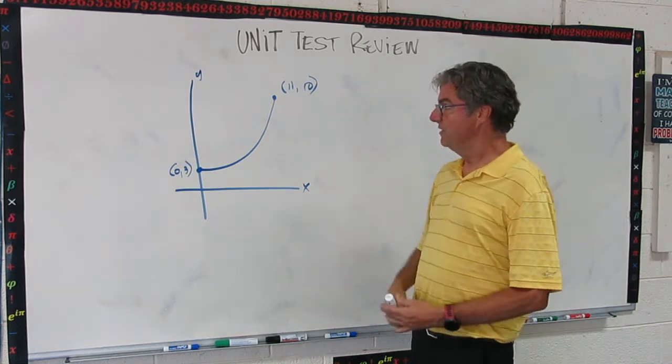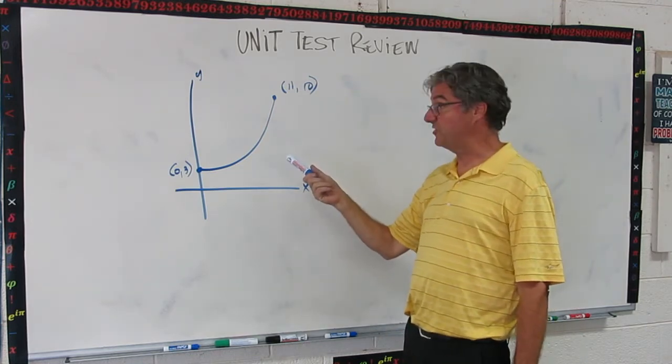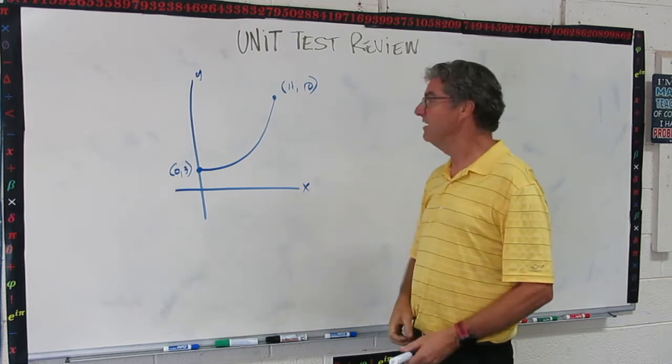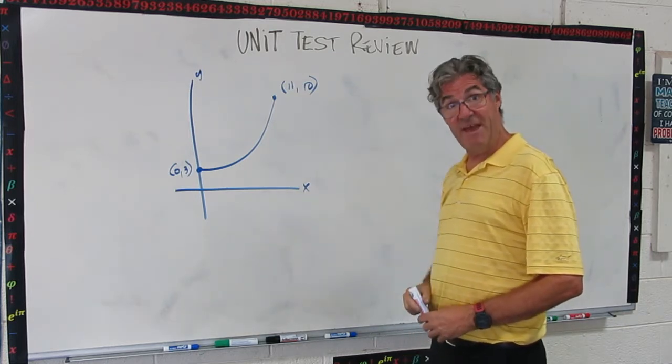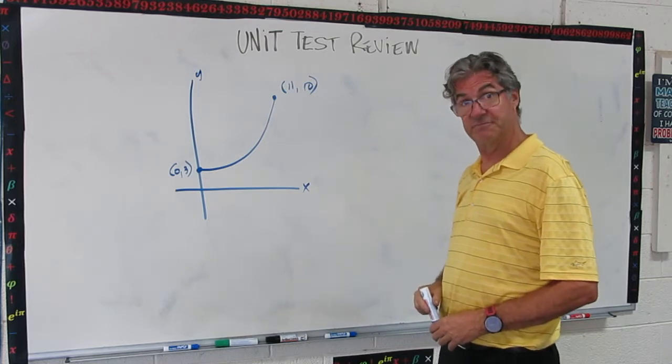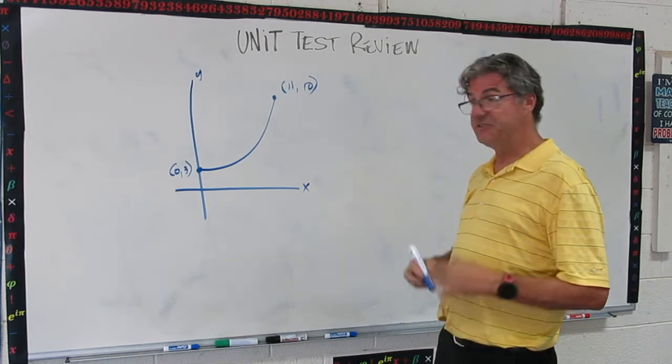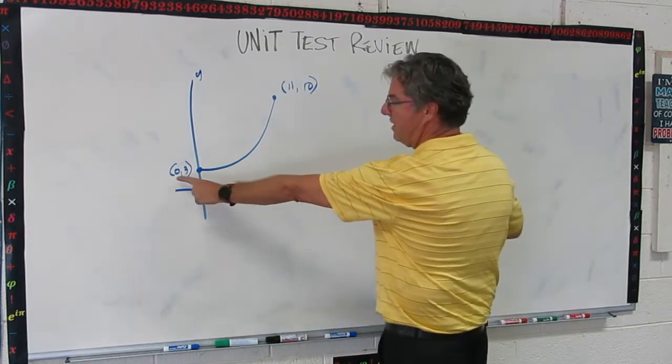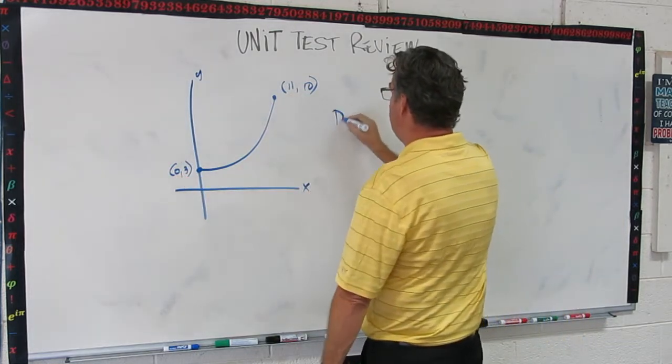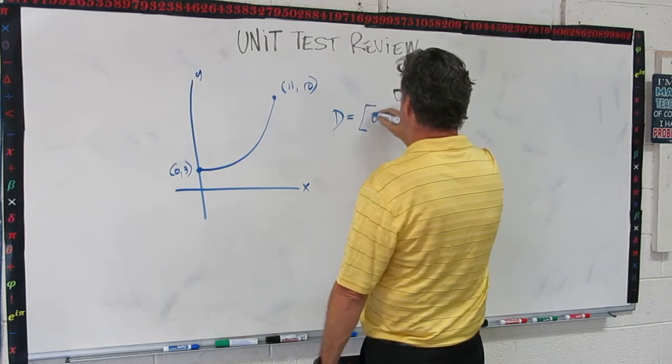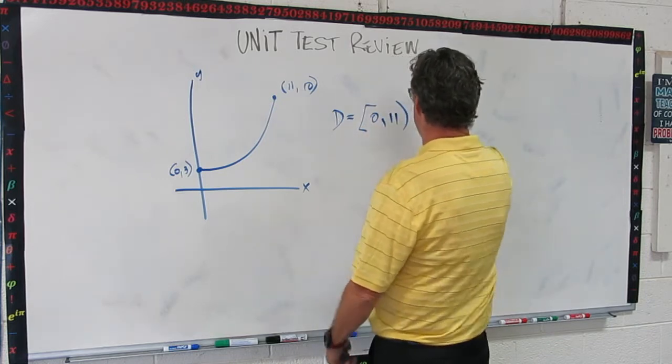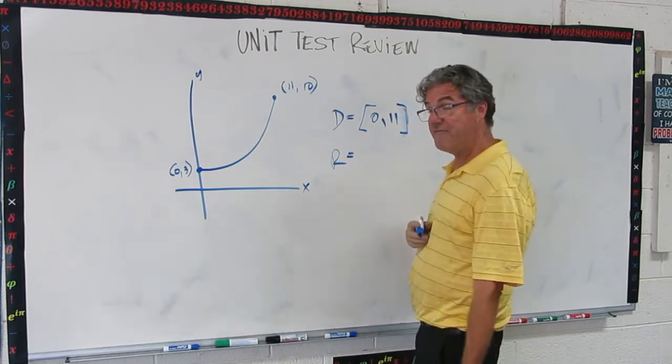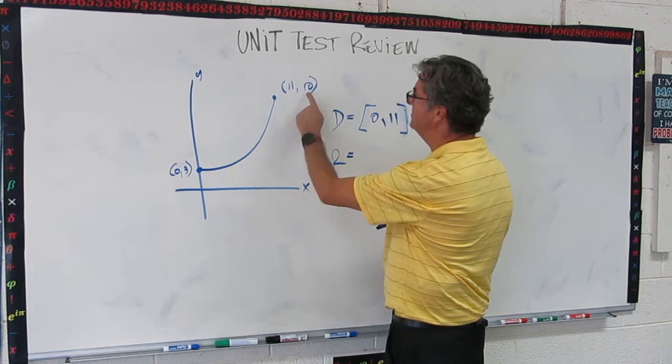Okay, here's a quick one for you. Graph this very simple function here on a very minimal graph, enough information to answer that. Pause the video and write down the domain and the range for this function. Okay, let's see how you did it. The domain is just the range in x values, so that goes from 0 to 11. So the domain is 0 to 11. Oops, wrong bracket. And the range is the range in the y values, so that's 3 to 10.